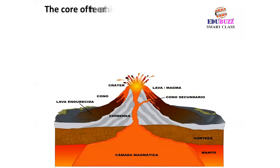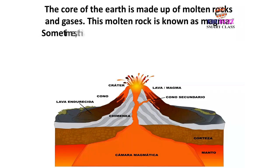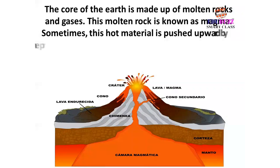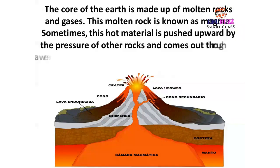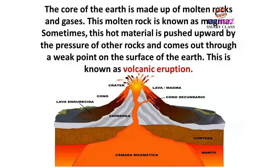The core of the earth is made up of molten rocks and gases. This molten rock is known as magma. Sometimes, this hot material is pushed upward by the pressure of other rocks and comes out through a weak point on the surface of the earth. This is known as volcanic eruption.